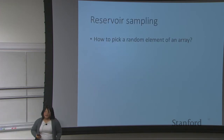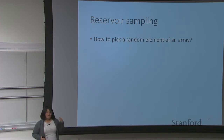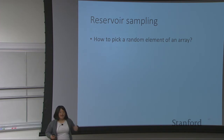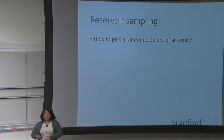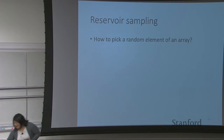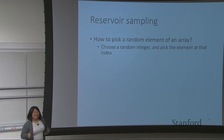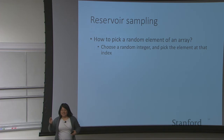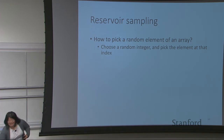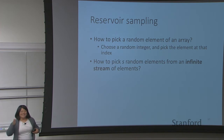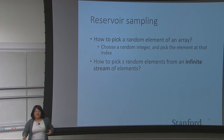So reservoir sampling — we start with the question of how do you pick a random element from an array? Let's say your array had ten elements. How would you select a random element from it? Well, one thing you could do is choose a random integer as your index into your array and pick an element at that index. But what would happen if you wanted to generalize this to an infinite stream of elements?